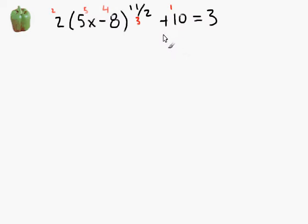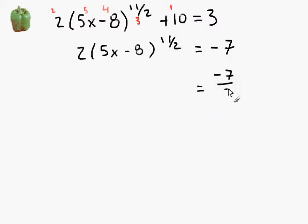So, we'll start off by subtracting 10 from both sides. That'll leave us with negative 7 on the right-hand side. And 2 times the quantity 5x minus 8 to the 11 halves on the left-hand side. Now, we're going to divide both sides by 2. So, we'll have minus 7 halves is equal to 5x minus 8 to the 11 halves power.